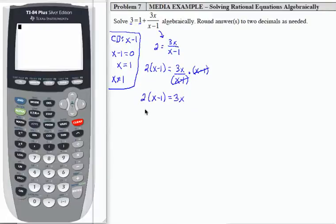Now I just have to clear the parentheses and combine like terms if possible and solve for x. So I'm going to subtract 2x from both sides here. And if I do that, this goes to 0. I get negative 2 equals x. I'm going to write that from left to right: x equals negative 2.